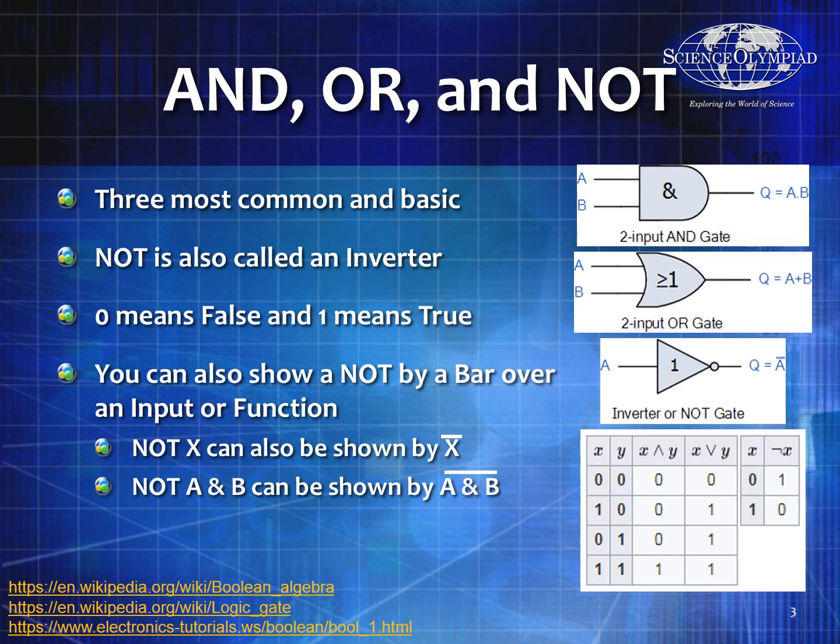AND means that both A and B inputs have to be true for the output to be true. So that means you have to have both a 1 and a 1 in for your A and B for the AND to be a 1. Everything else is a 0.